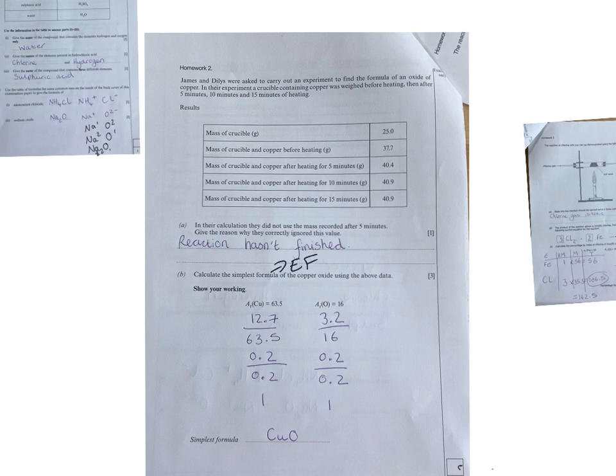So work out their masses. This was the complicated bit, trying to work out their masses. So to work out the copper, I did these two numbers minus each other, so you should have got 12.7. I then took away the mass of the crucible, which was 25, then took away the mass of the copper, which was 27, and you ended up with 3.2, which was my mass of oxygen.